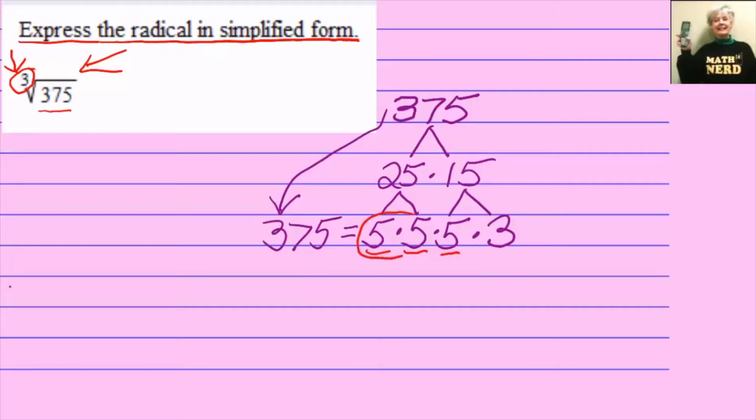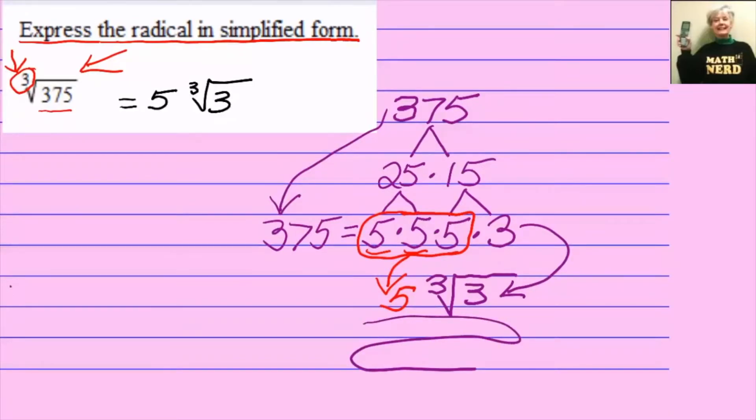Now notice you have three 5's—5 repeats 3 times—that matches the index 3. So when we're using a cube root, 5 will go on the outside of the cube root while 3, the poor lonely leftover number, will go on the inside. Therefore the cube root of 375 simplifies into 5 times the cube root of 3.